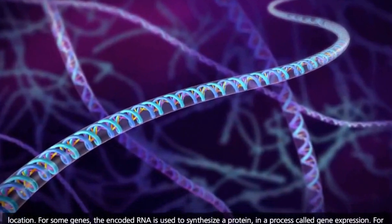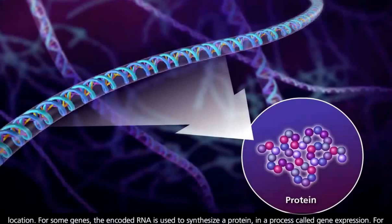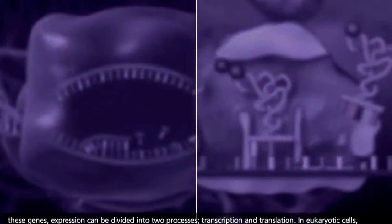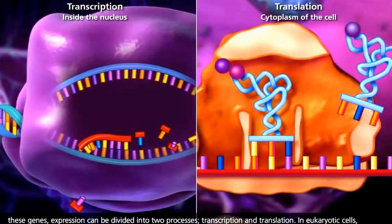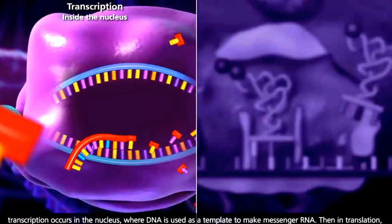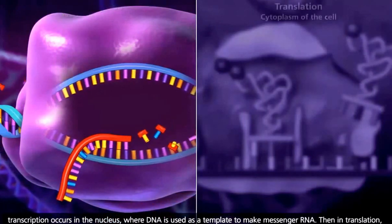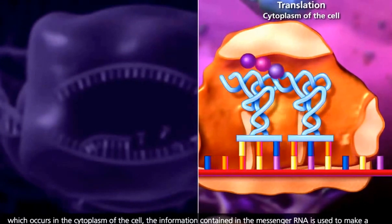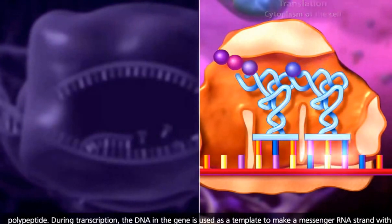For some genes, the encoded RNA is used to synthesize a protein in a process called gene expression. For these genes, expression can be divided into two processes: transcription and translation. In eukaryotic cells, transcription occurs in the nucleus, where DNA is used as a template to make messenger RNA. Then in translation, which occurs in the cytoplasm of the cell, the information contained in the messenger RNA is used to make a polypeptide.